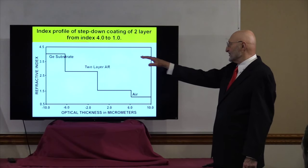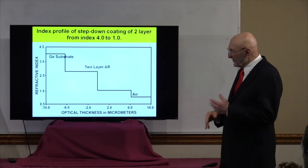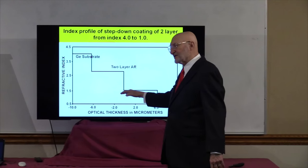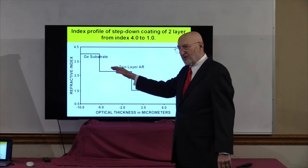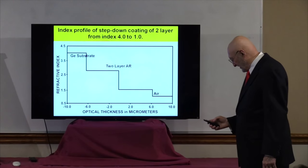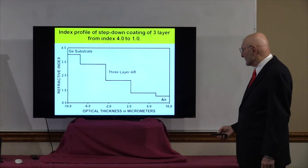Now I could have a two-layer solution, and with the same kind of algebra you could probably work out what indices these have to be to give me a good coating. And then I could go to a three-layer and similar things, and four and five.